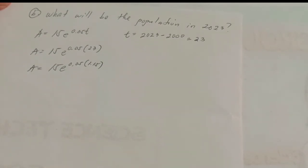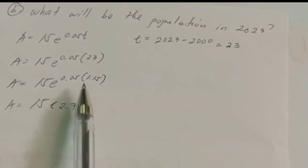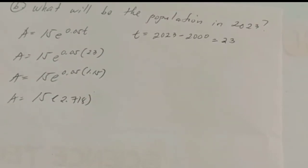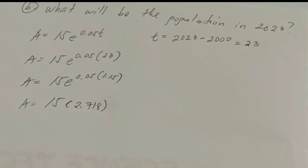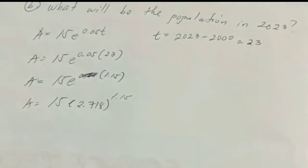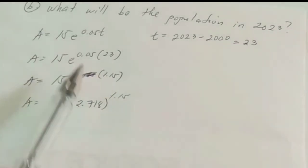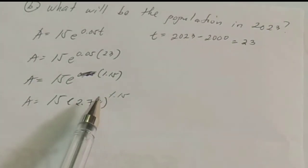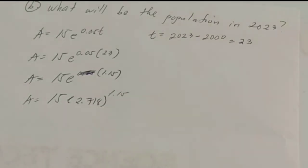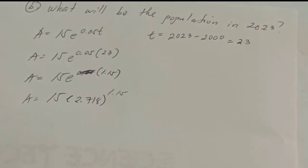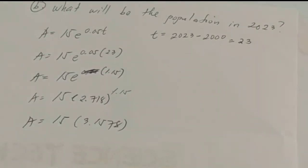We can also substitute the value of Euler's constant. Using the calculator, 2.718 raised to 1.15 equals 3.1578. Now multiply 15 times 3.1578. The answer would be 47.367.